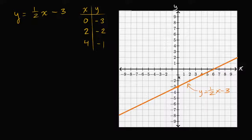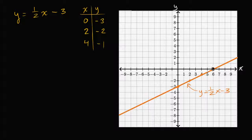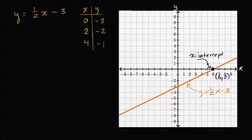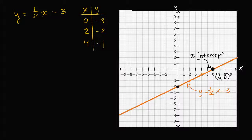[Repeated section] When we look at this graph, we ask where does it intersect our axes? The x-intercept — where the graph intersects the x-axis — is at the point six comma zero, which happens when y is equal to zero. The y-intercept — where the graph intersects the y-axis — is at the point zero comma negative three, where x is equal to zero.